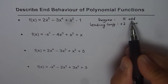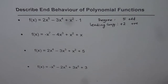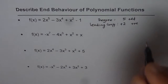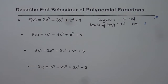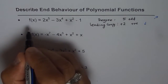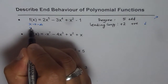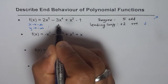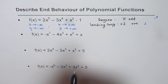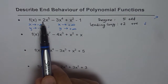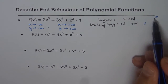If the degree is odd, both ends face in opposite directions. If the leading coefficient is positive, the right side is up. So the end behavior is: as x approaches negative infinity, y approaches negative infinity. And as x approaches positive infinity, y approaches positive infinity. That is the end behavior of this odd-degree polynomial with a positive leading coefficient.